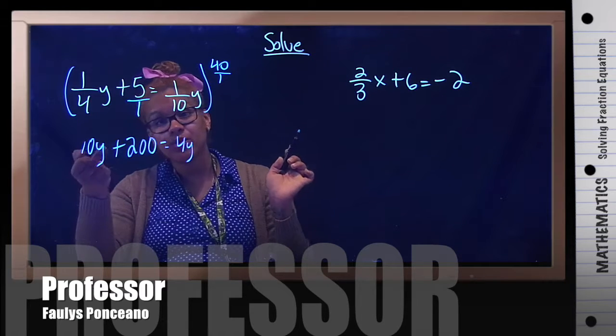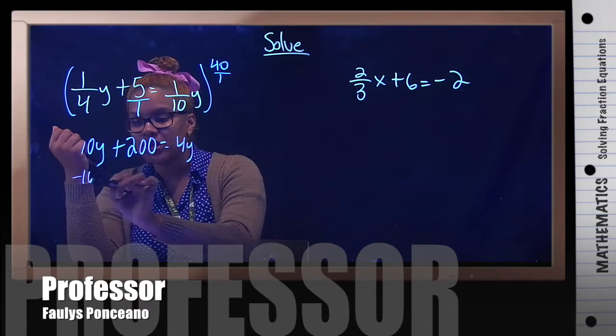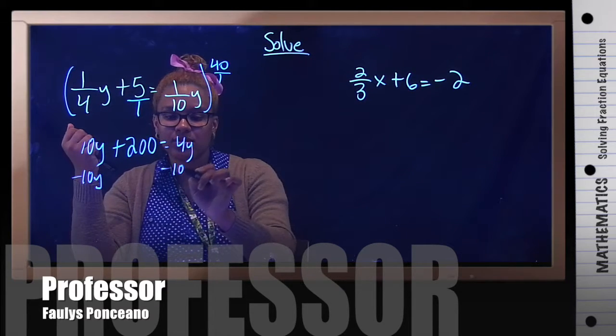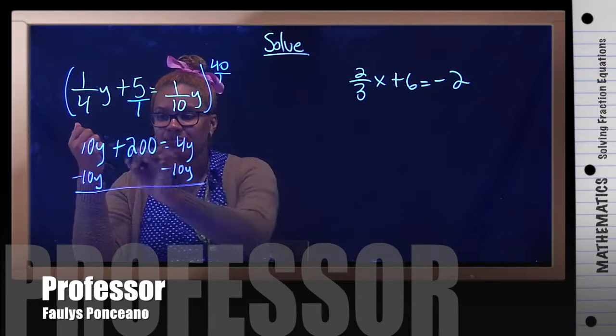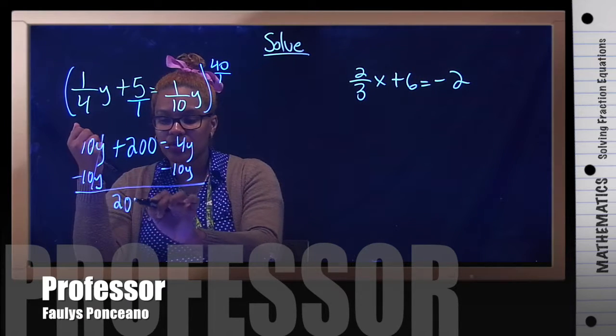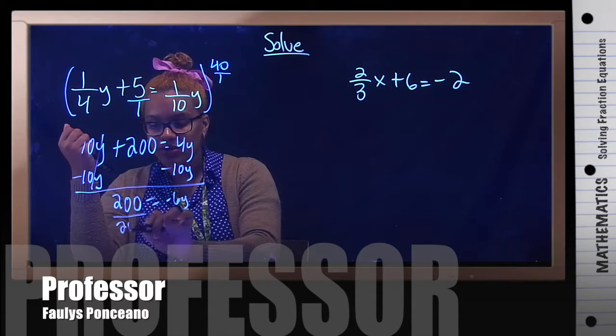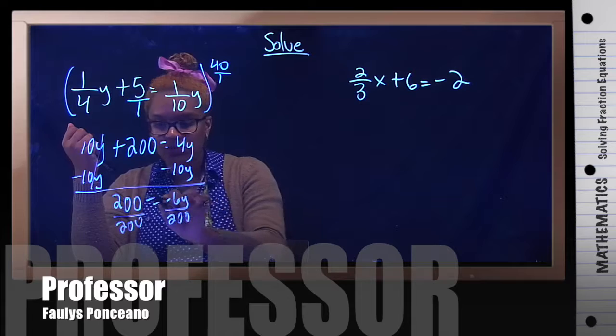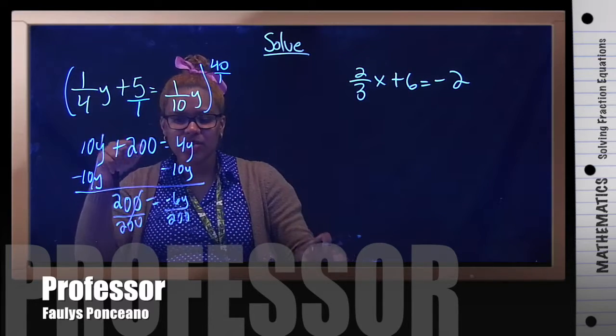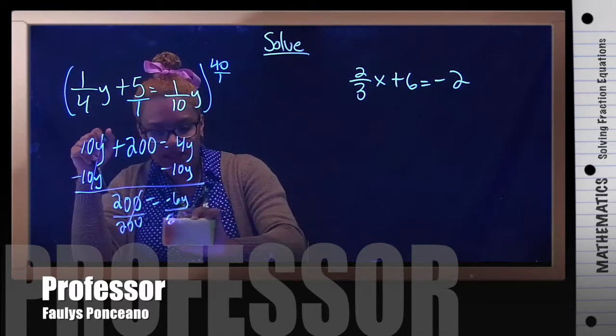Then what do we do? We simply solve for y. Minus 10y on both sides. 10y, sorry. Let's do it with 200 equals negative 6y. Divide by 200. I'm sorry, I'm losing my mind. Divide by 6.